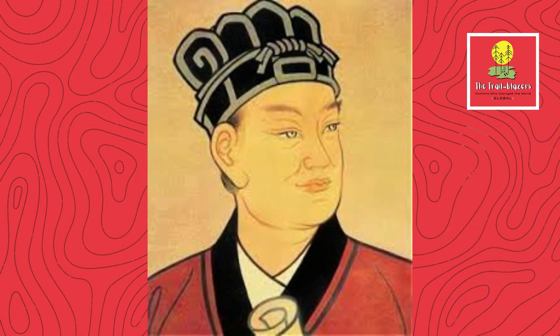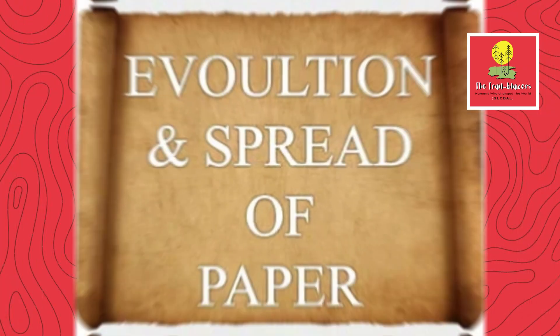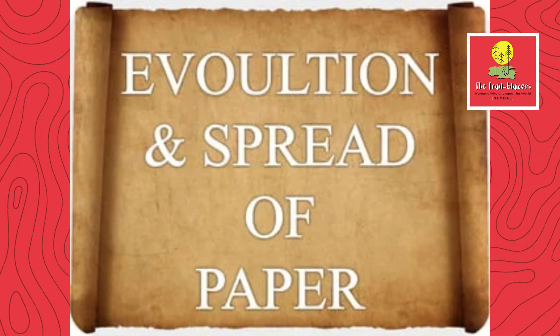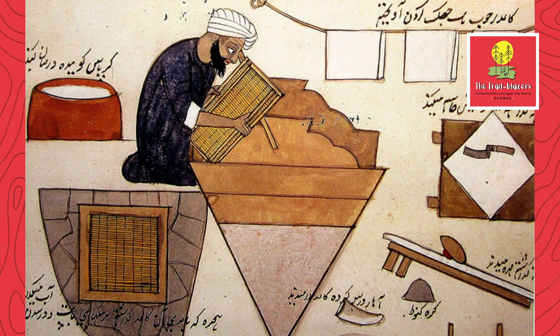While Kai Lun is credited with the initial innovation, papermaking continued to evolve over centuries. The knowledge of papermaking gradually spread along the Silk Road, reaching Korea and Central Asia by the 5th century CE, and by the 8th century it had reached the Islamic world, where advancements like adding cotton fibers further improved paper quality.